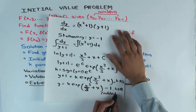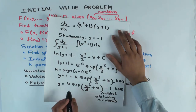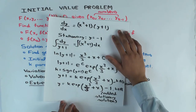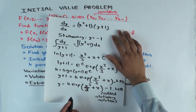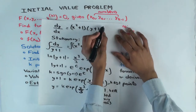So y equals K · exp(x³/3 + x) − 1, and this is the general solution with one free parameter K. Now suppose I give you the initial value condition: when x is one, y is two. How do you find the function?